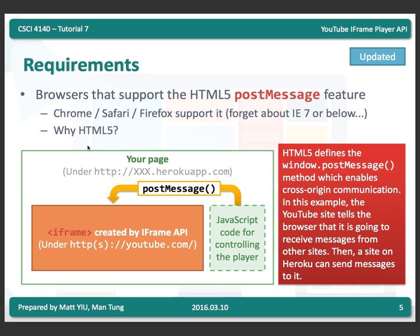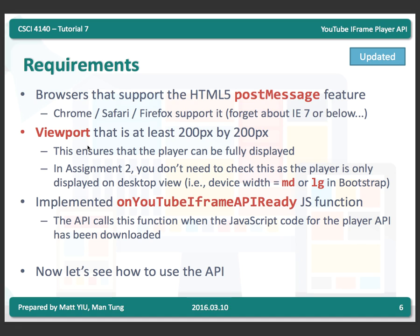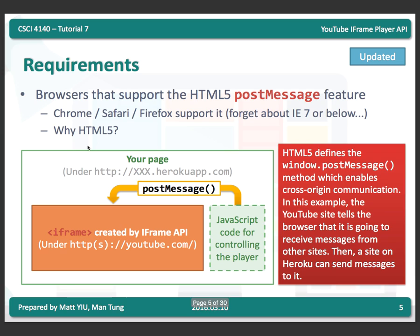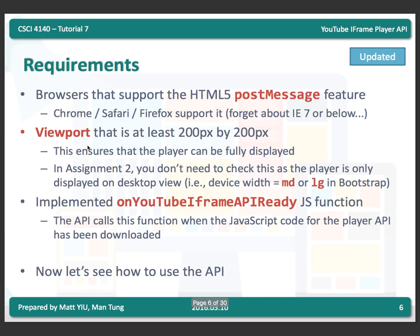By using the postMessage function, your JavaScript code can access resources in the YouTube iframe through controlled cross-origin communication. The browser must support postMessage for this to work. The second requirement is that the viewport is at least 200x200 pixels to ensure the player can be fully displayed — in Assignment 2 this is automatically fulfilled since the player is only shown in desktop view. The third requirement is to implement a JavaScript function called onYouTubeIframeAPIReady, which the API automatically calls when it finishes loading.